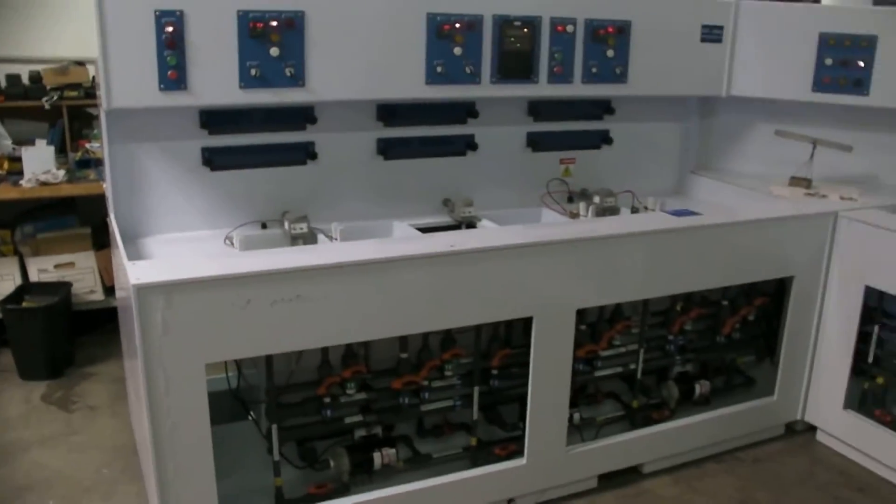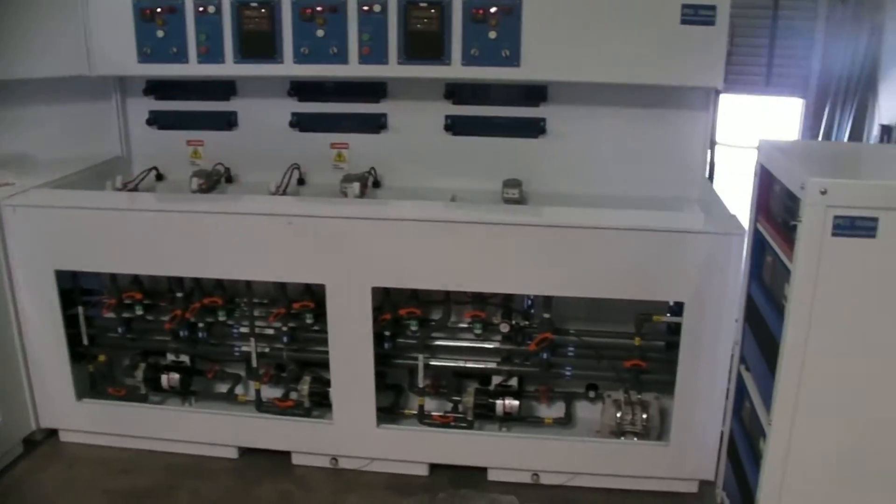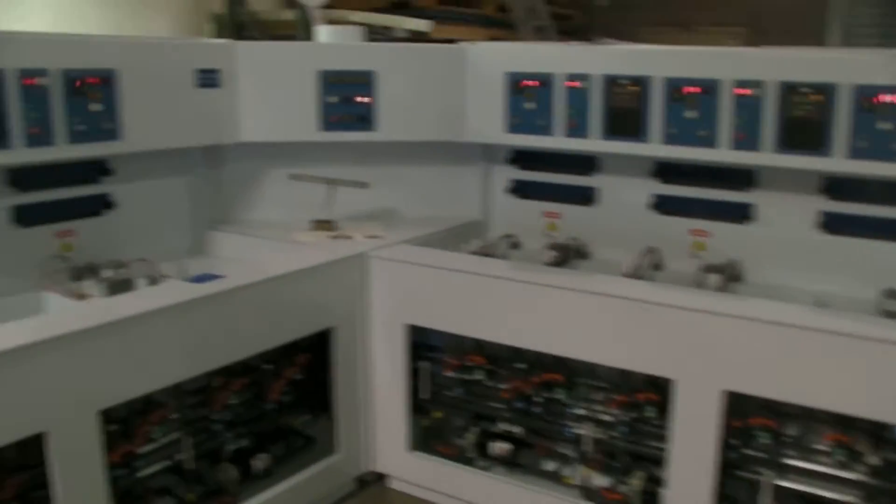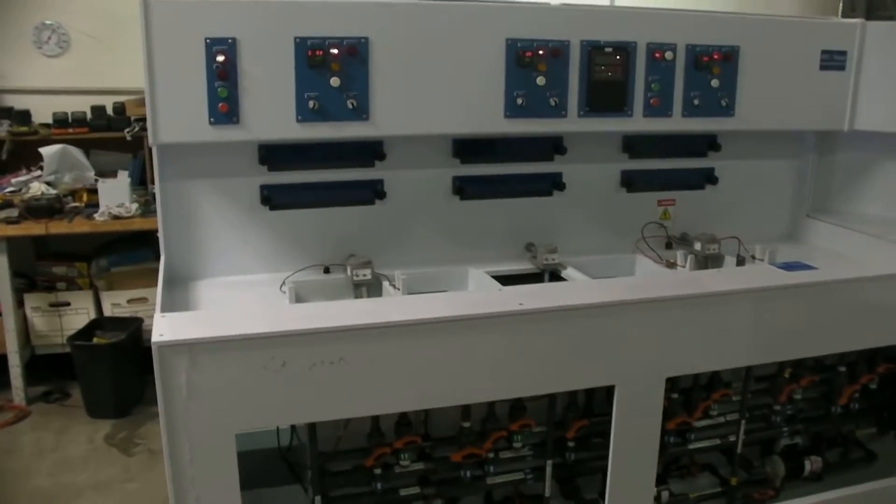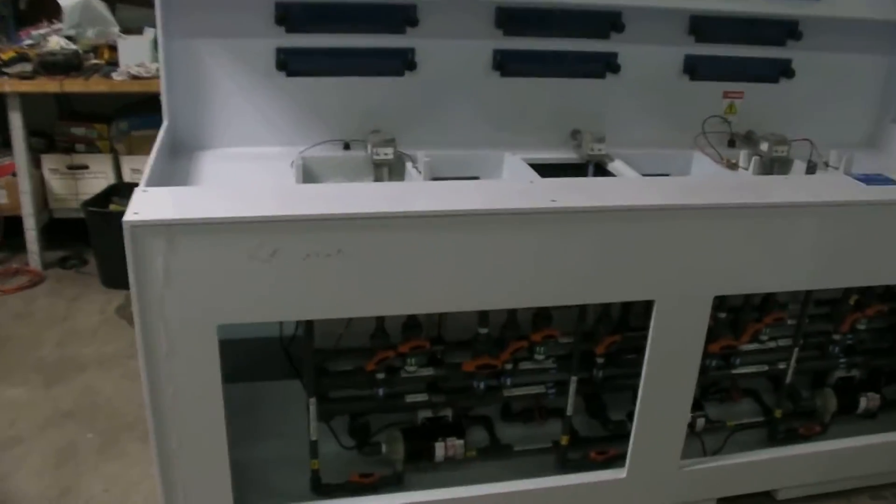This is actually a much larger system than most of our customers really need. This particular customer needs a substantial amount of Type 2 processing done in addition to color anodizing.